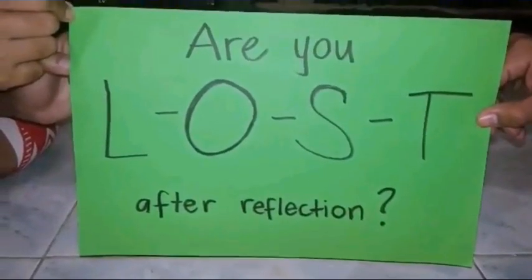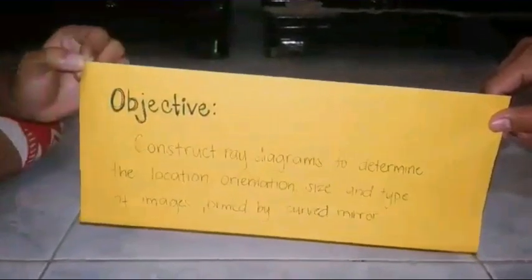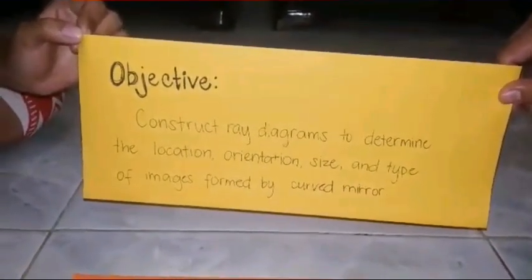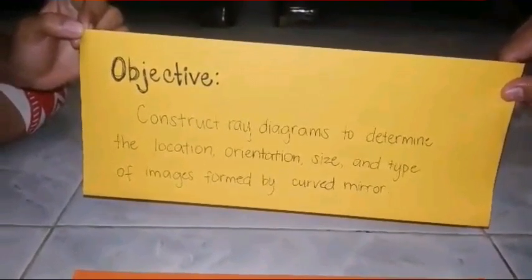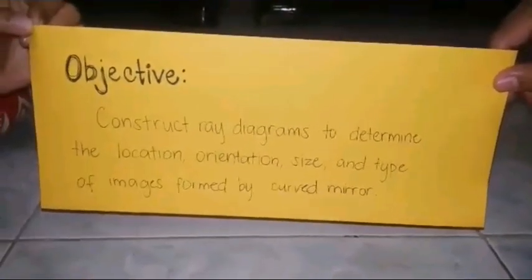Activity 6. Are you lost after reflection? The objective of this activity is to construct ray diagrams to determine the location, orientation, size, and type of images formed by curved mirror.